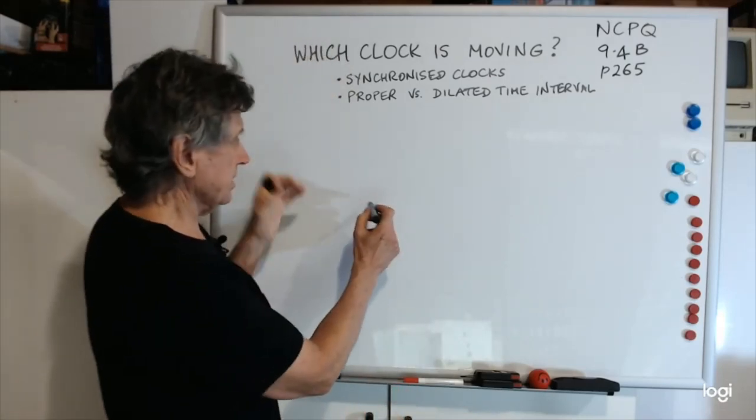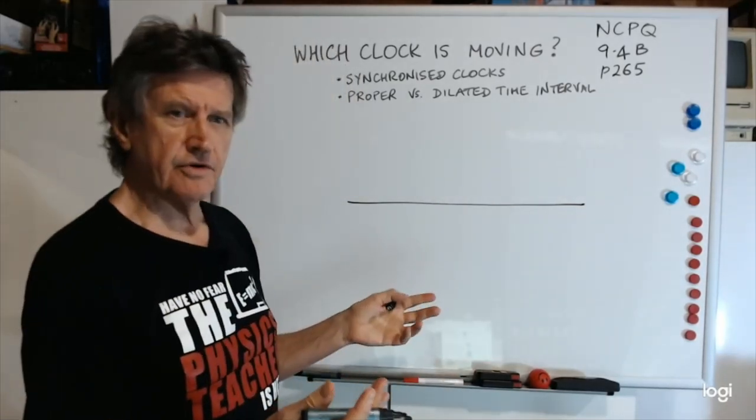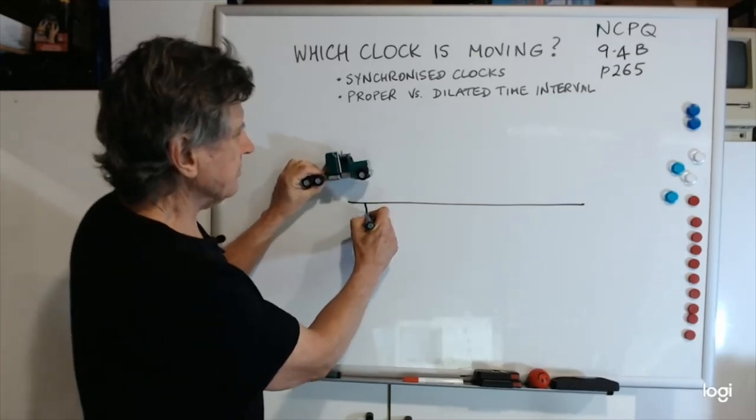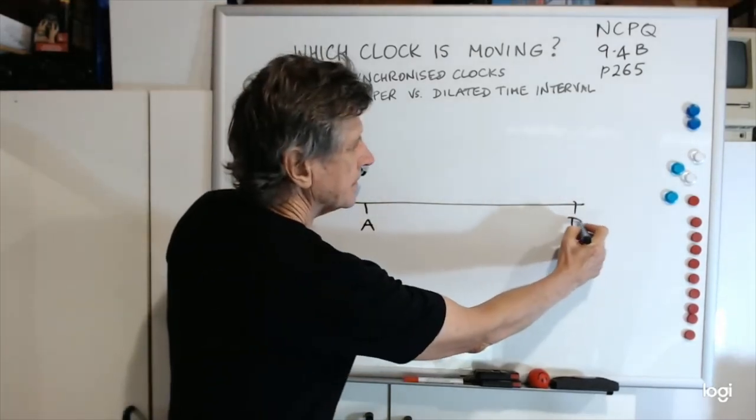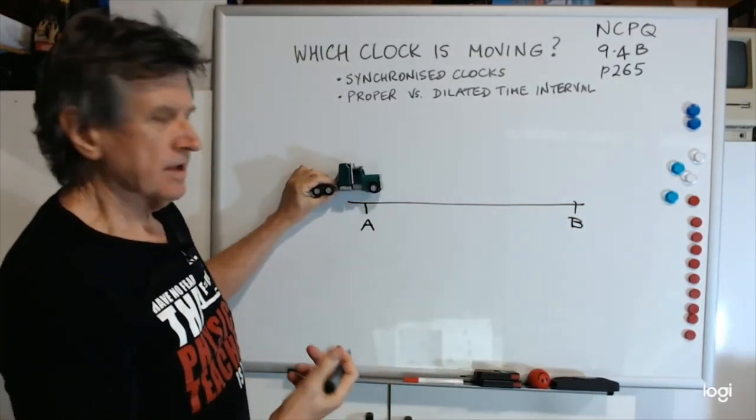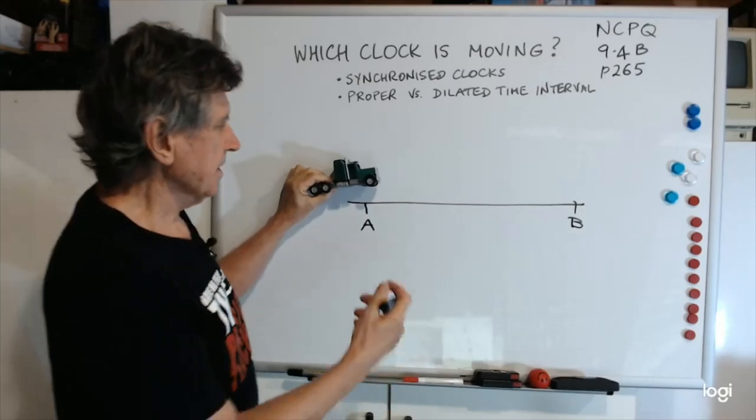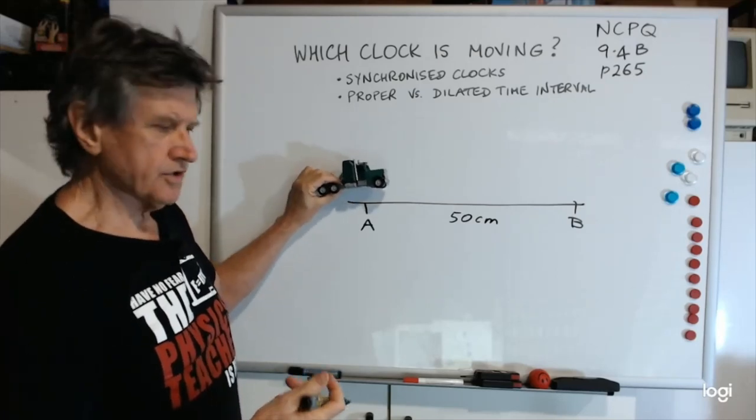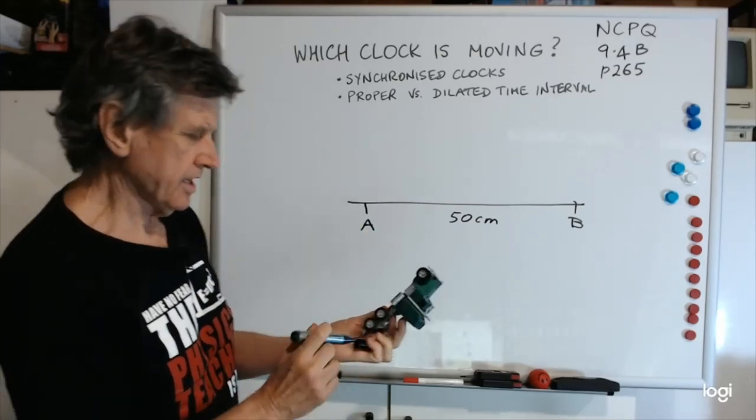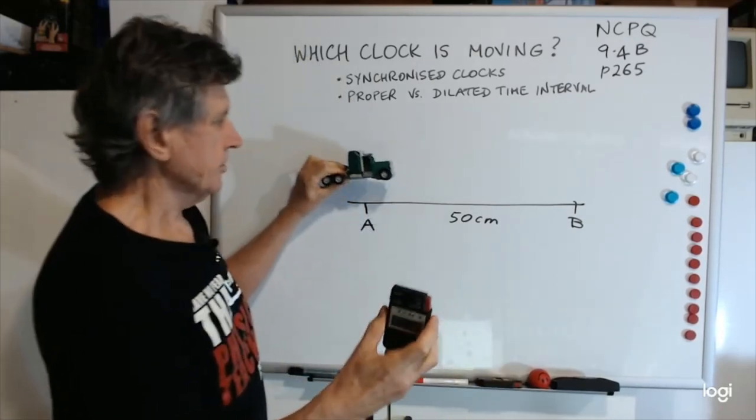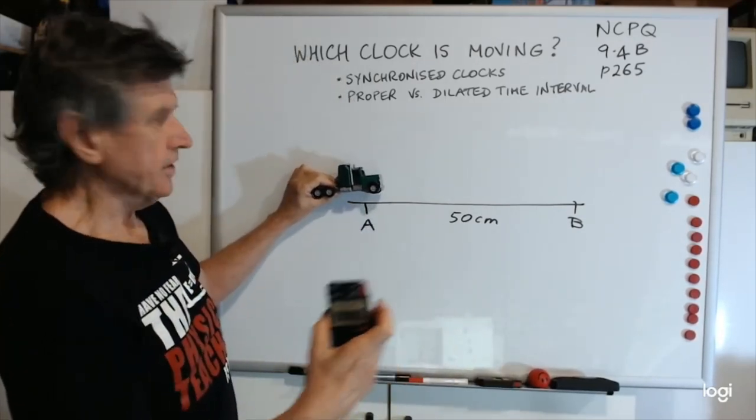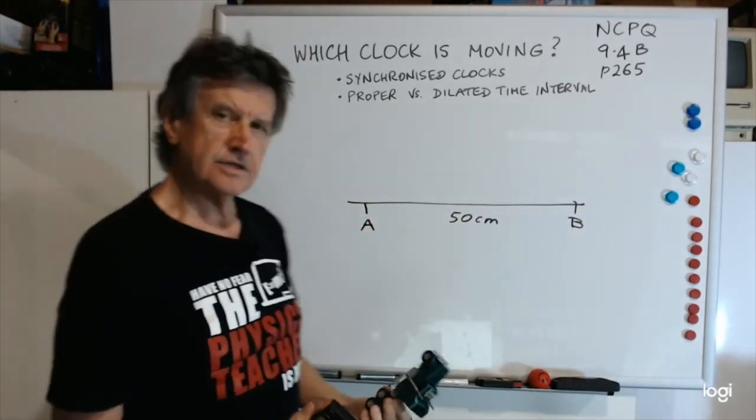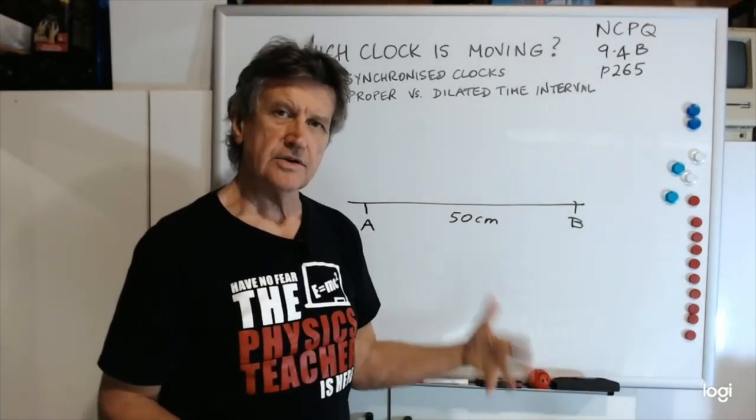Let's imagine we had this on your front bench of your room, and we had say a car of some sort, a truck, and we wanted to time it to go from point A to point B on the front bench. The question is, how would you time that? Now let's say that's 50 centimeters and you're after the velocity. So what you'd do is you'd get a stopwatch, and you'd start the stopwatch when you saw it there, and then you'd stop the stopwatch when you saw it there.